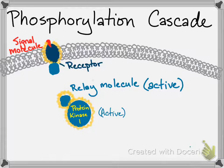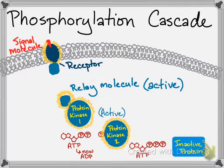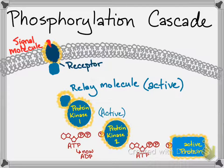The active kinase can add a phosphate to a second kinase. Kinase 2, once activated, might activate a protein by adding a phosphate to an inactive protein. That active protein will then do something, like turn on a gene or break down the cytoskeleton.